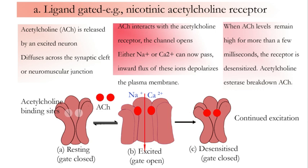Acetylcholine is released by an excited neuron. It diffuses across the synaptic cleft or neuromuscular junction. This acetylcholine interacts with the acetylcholine receptor, causing a conformational change and opening the channel. Either sodium or calcium can now pass through the channel. The inward flow of sodium and calcium ions depolarizes the plasma membrane — positive charge coming in. When the acetylcholine level remains high for more than a few milliseconds, the receptor is desensitized and the gate closes. Finally, acetylcholinesterase breaks down acetylcholine and this cycle is repeated.